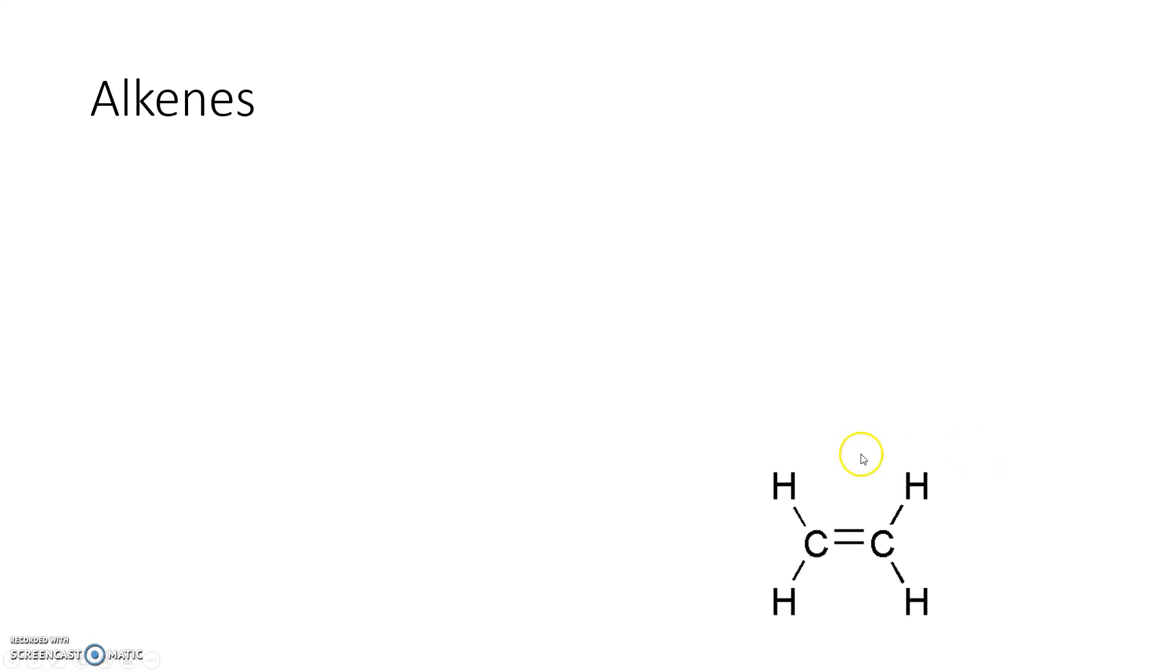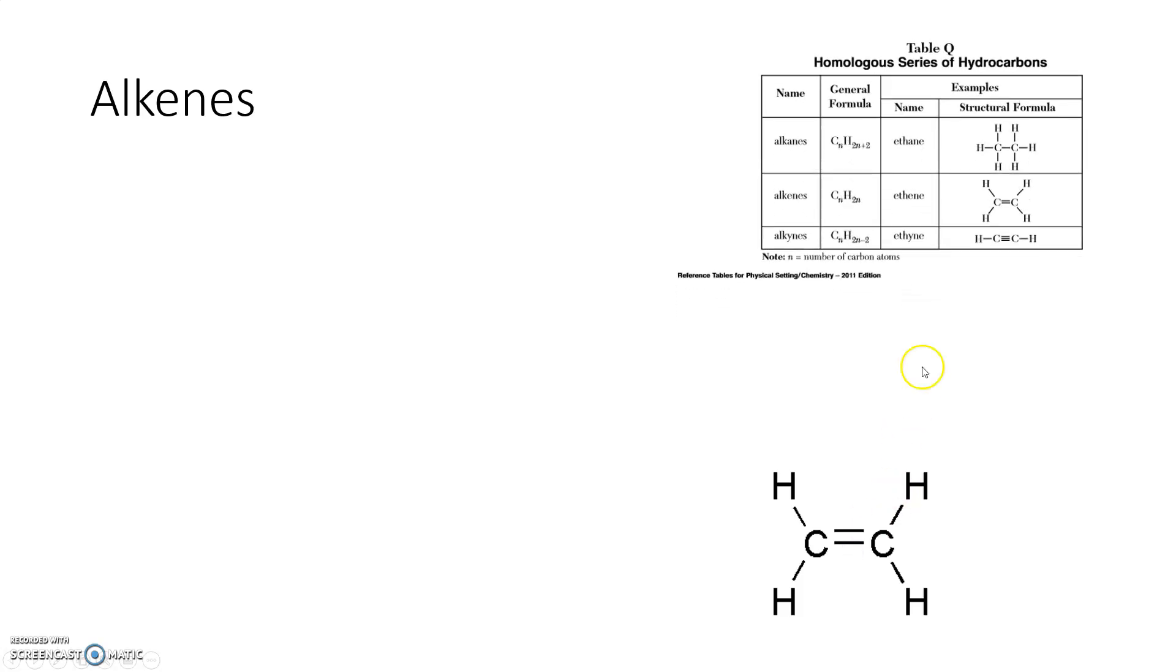So the first thing we want to look at is we can have a picture, a structural formula like this one here, and we want to notice right away that we have carbon and hydrogen, a hydrocarbon, and there's a double bond right here. So when we come to look at table Q, we want to take a look. If you take a look right here under structural formula, you can see that the carbon-carbon bond here is a single bond.